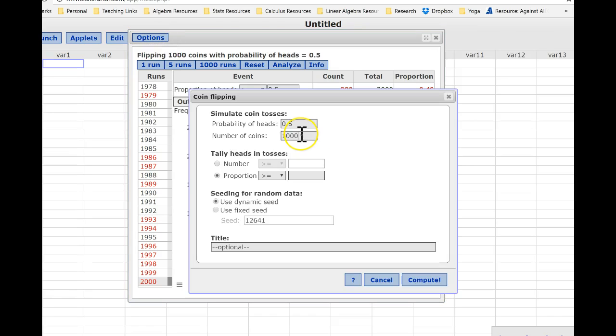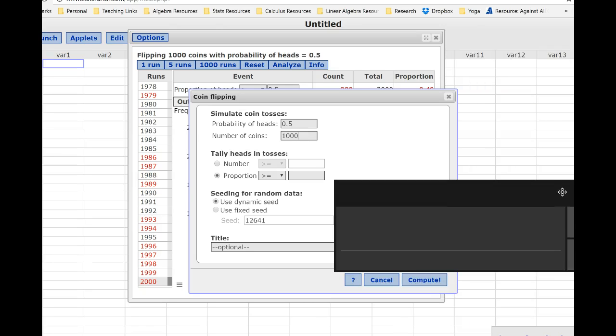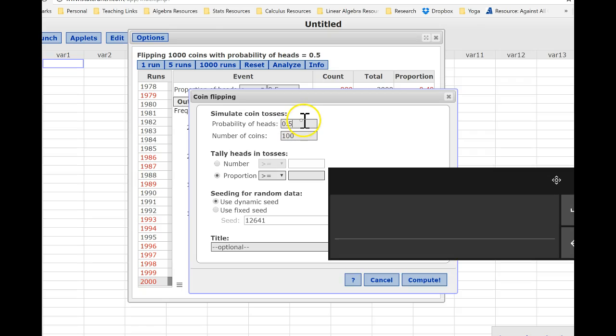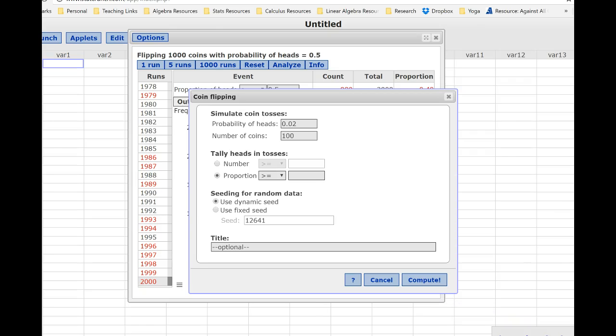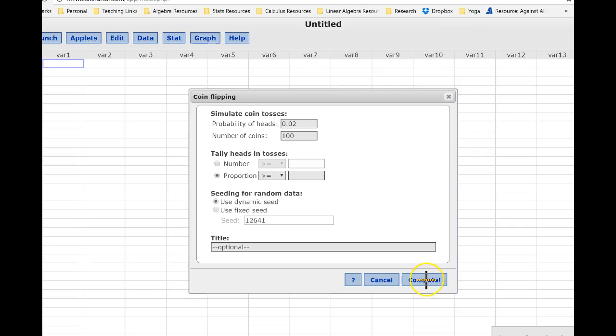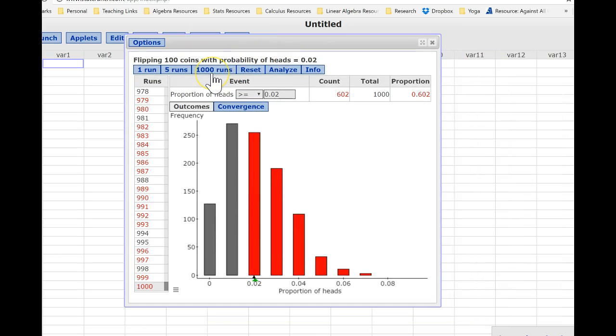So just to show you what that would look like, let me change this so that we only have a hundred. And let's change this to something where we're not going to have that rule of thumb, let's maybe do 0.02. So if we use these numbers here, our np would be 2, which is well short of our 10 that we need. So if I was to use these numbers and do my thousand runs, you can see our proportion of heads is not symmetric. This does not follow a normal distribution.